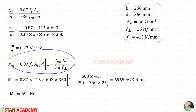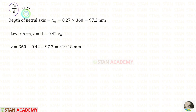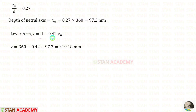Applying all values to the moment of resistance expression, we get MU, which divided by 10⁶ gives MU in kilo-newton meters. From XU/D = 0.27, the depth of neutral axis XU = 97.2 mm. Using the lever arm formula, the lever arm = 319.18 mm.